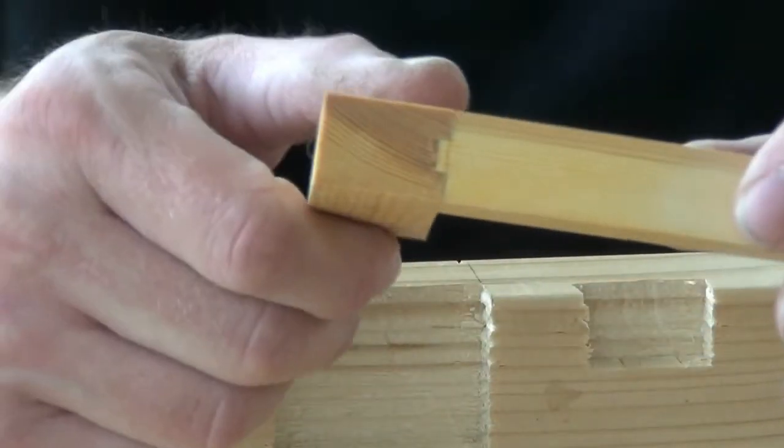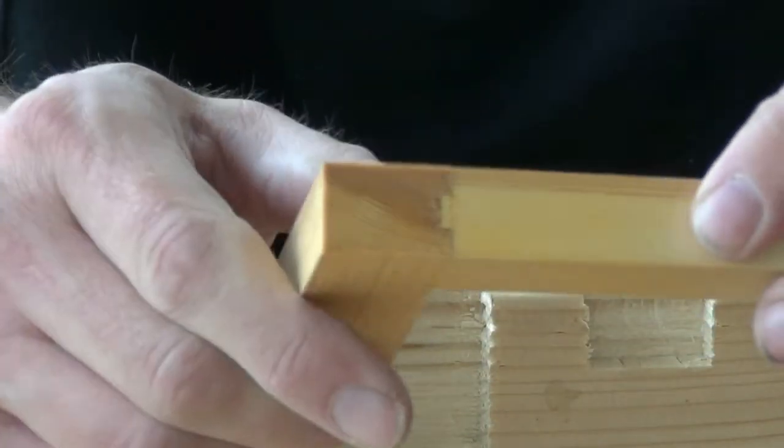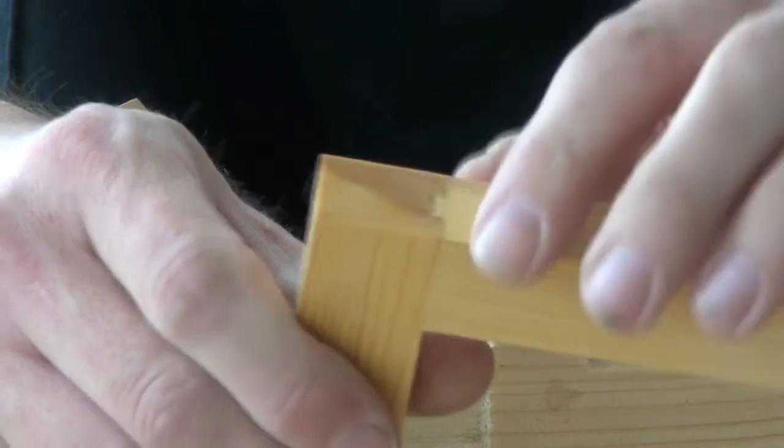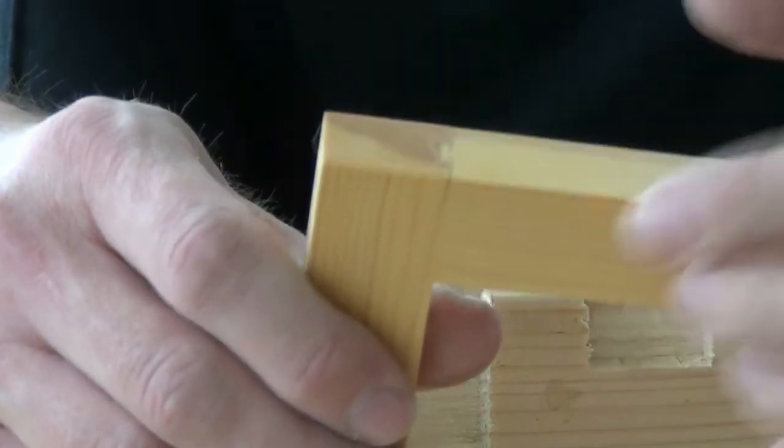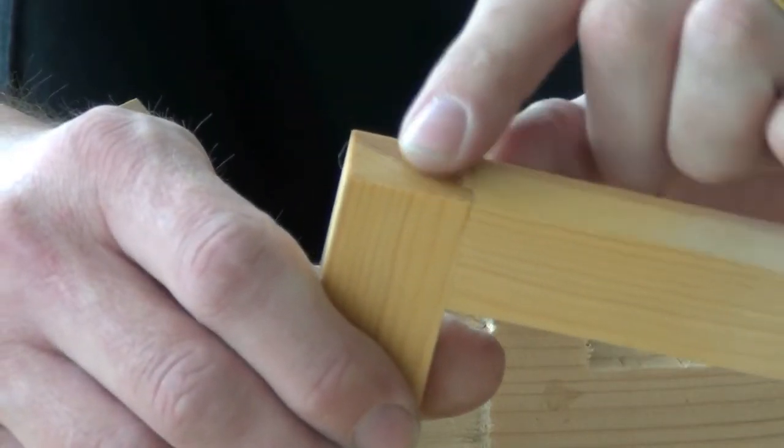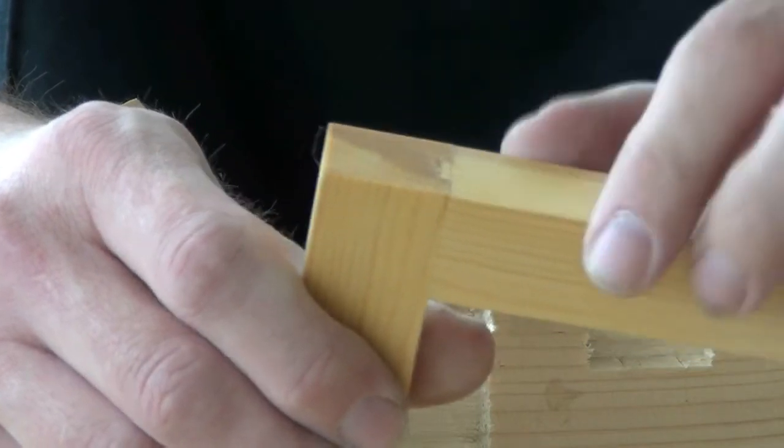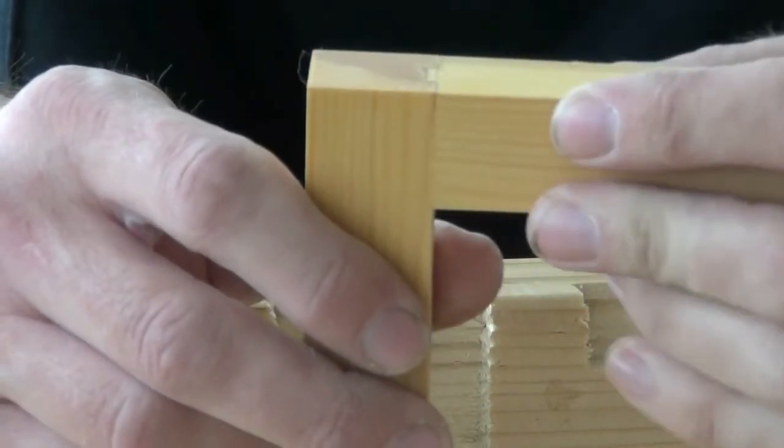This is a little haunched mortise and tenon. That allows the whole width of the piece being joined to be supported within the piece it's joined to, and helps to prevent it from cupping.